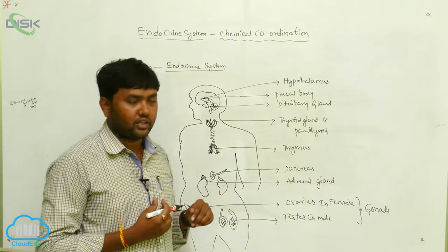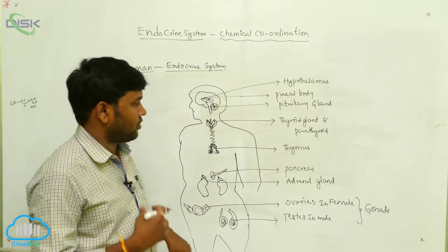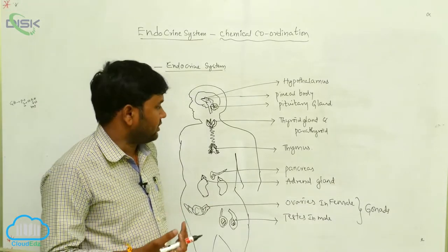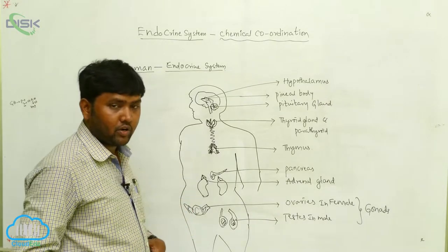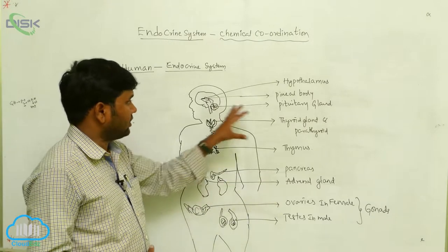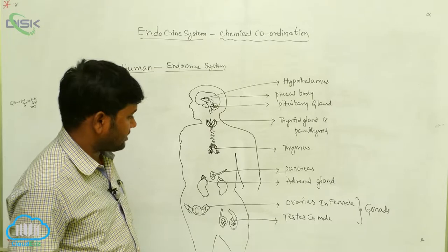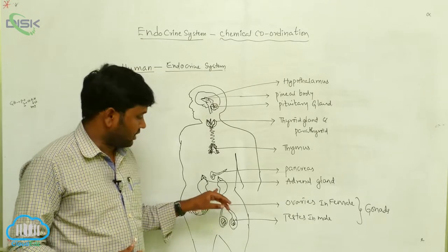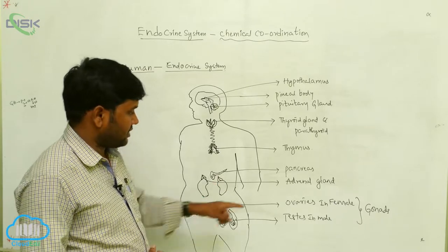The thymus is present in children, and it disappears when the child reaches the puberty stage. In the digestive region, one of the important glands is the pancreas. Going to the back side, that is the kidneys. On top of the kidneys is one of the glands called the adrenal gland.